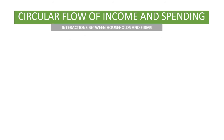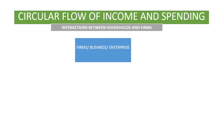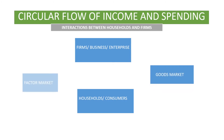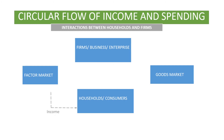We are still looking at the interactions between the households and the firms. We have got two participants, namely the firms and the households, and the two markets — that is the goods market and the factor market. Households get income from the factor market by selling the factors of production. They spend their income in the goods market.